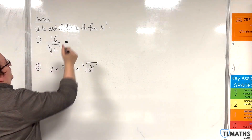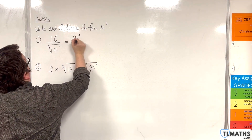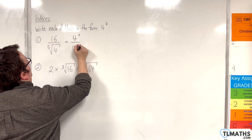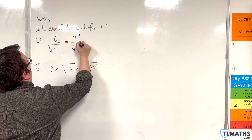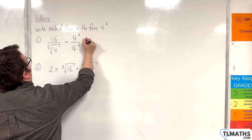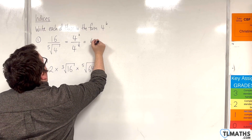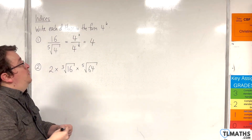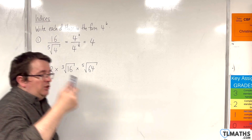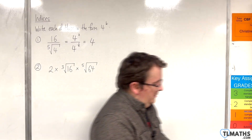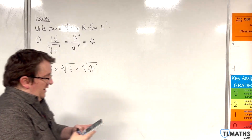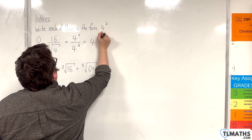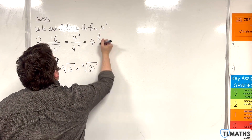Now, 16 is 4 squared, and we can write the 5th root of 4 as 4 to the power of 1 fifth. We then have 4 squared divided by 4 to the 1 fifth, so we need to do 2 take away 1 fifth. So, 2 take away 1 fifth is 9 fifths, so 4 to the power of 9 fifths.